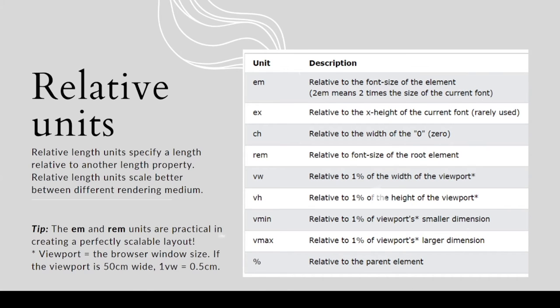Relative Length Units specify a length relative to another length property. These are the relative units: em, rem, vh, vw, and %. Here, em is relative to the font size of the element. For example, if a paragraph tag has a font size of 16 pixels (which is by default),